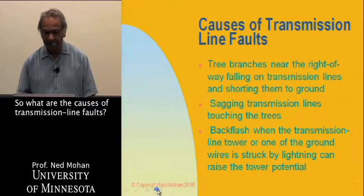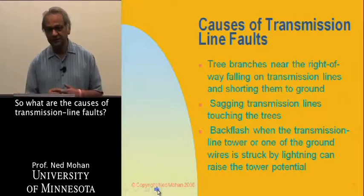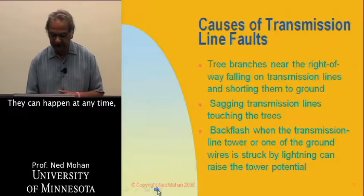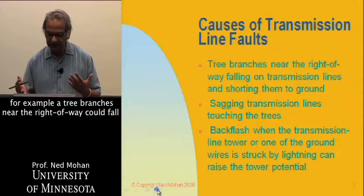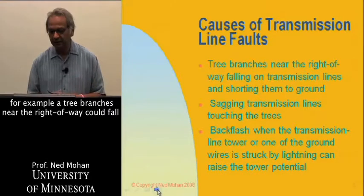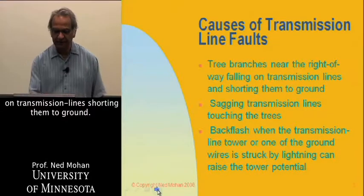So let's start. What are the causes of transmission line faults? They can happen at any time. For example, tree branches near the right-of-way could fall on transmission lines, shorting them to ground.